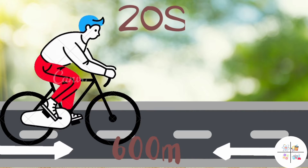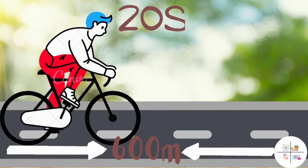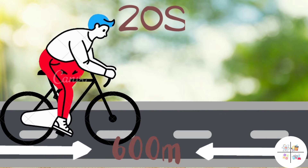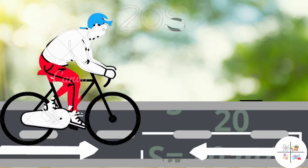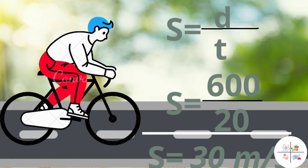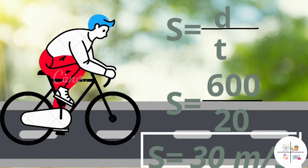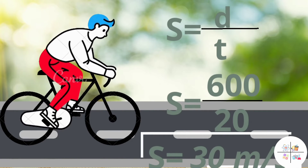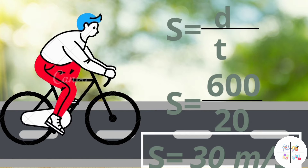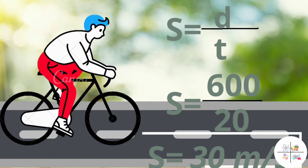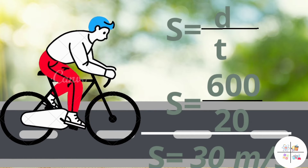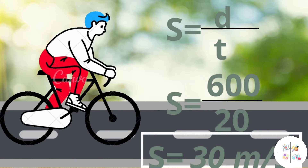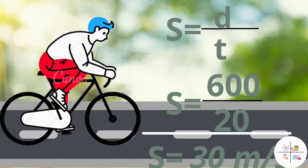Now, if we were asked to find the speed of the bike, speed equals distance upon time, so s equals 600 divided by 20, which makes 30. This ratio is called the speed of the object, which is 30 meters per second.